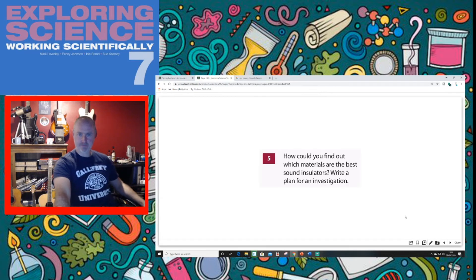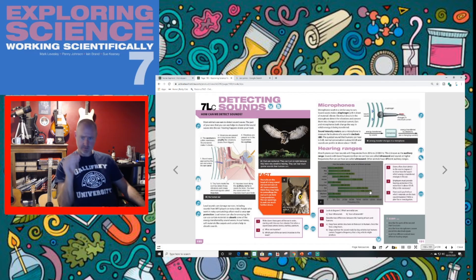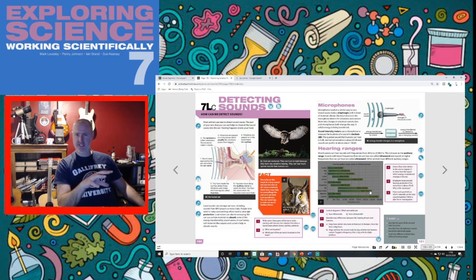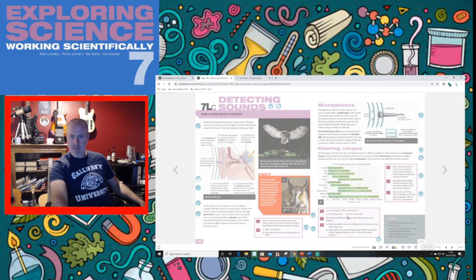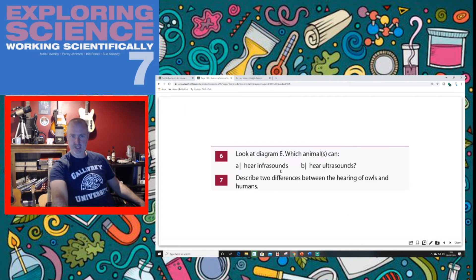Question five: How could you find out which materials are the best sound insulators? Write a plan for that investigation. We'll talk a little bit more about investigating sound next lesson and writing up the method. So I won't worry about that too much for now. But this question here throws in some interesting terminology.